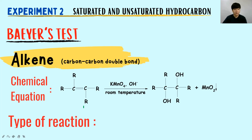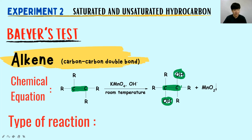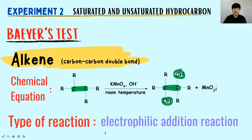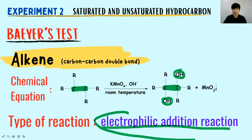According to the chemical equation for the Baeyer test, you have the presence of a carbon-carbon double bond which becomes a single bond, with OH added to the carbons that held the double bond — so you have a process of addition. The type of reaction is electrophilic addition reaction.